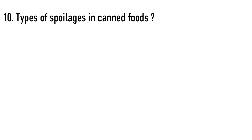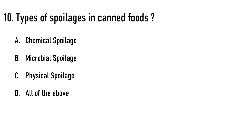Next question: What are the types of spoilage in canned foods? Options are: A) chemical spoilage, B) microbial spoilage, C) physical spoilage, D) all of the above. The correct answer is option D, all of the above. These are the three types of spoilage in canned foods.